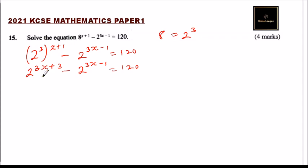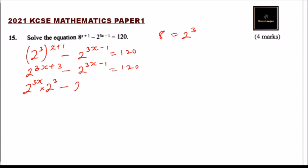We can rewrite this by splitting the exponents: 2^(3x) × 2^3 minus 2^(3x) × 2^(-1) = 120, applying the first law of indices to combine the powers.